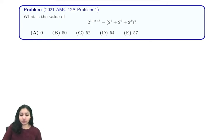The first part of the expression is 2^(1+2+3). We can express this as 2^6 because 1 + 2 + 3 = 6.